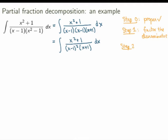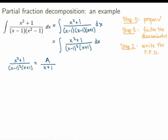Step 2 is to write down the partial fraction decomposition according to the rules we've seen. I'm going to set aside the integral for a moment and just look at the rational function itself. First there's a simple linear factor x plus 1, so I get a single term A over x plus 1. The other factor x minus 1 comes with exponent 2, so I get two terms: B over x minus 1 with exponent 1, and another with exponent 2. This is the partial fraction decomposition for my rational function.